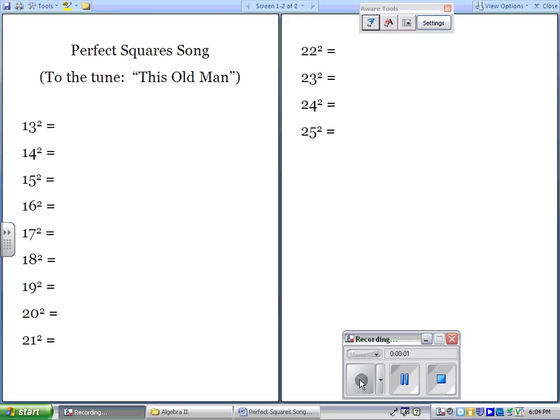All right, here's a perfect square song to help you memorize your perfect squares from 13 squared up through 25 squared. It's to the tune of This Old Man, a nursery rhyme song. I have four children, so I'm always thinking of children's songs when I make up things.